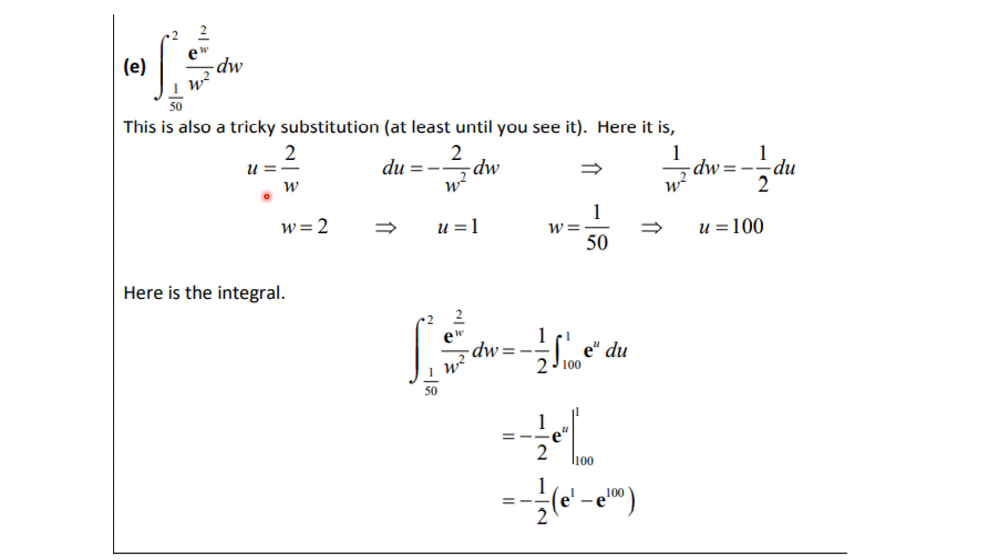I think this is the last example. Here we're going to let u equals 2 over w. That means du is minus 2 w to the minus 2 dw. And so 1 over w squared dw is going to be minus 1 half du. The limits, when w is 2, u is 1. When w is 1 over 50, u is 100. Again, you should check these calculations. So this integral becomes minus 1 half the integral from 100 to 1, e to the u du. The integral of e to the u is e to the u. And so I plug in these values. And again, minus 1 half, this is going to be e to the 1. That's just a number, minus e to the 100. Now this is a very big positive number at the end because e to the 100 is an enormous number. And you would leave it just that way.